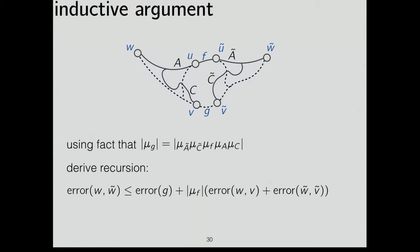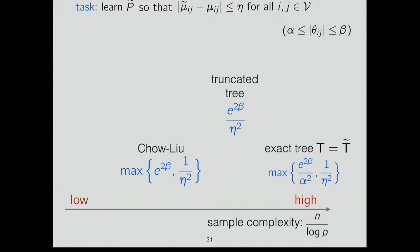The proof works out. Note that 1-over-eta-squared is an obvious lower bound: even just to get correlations accurate on each edge, you need 1-over-eta-squared log P samples. So there's a gap between our upper bound and the lower bound — a tantalizing open question of which is the right answer, and whether you can get something independent of the maximum edge strength. This whole talk was about K equals 2; the case K greater than or equal to 3 seems more delicate, possibly requiring tree recursions, and is still ongoing work.